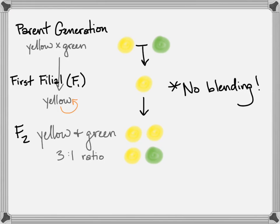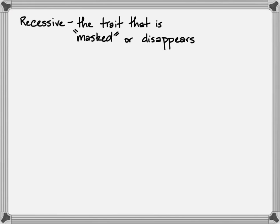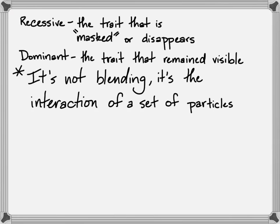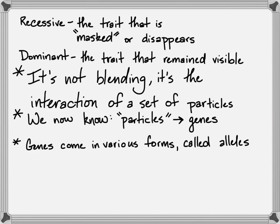Based on his observations, he came up with some terms that we still use today. The first one is recessive, and that's the trait that is masked by the dominant trait or disappears. The dominant trait is the one that remains visible in every generation. And then you have the fact that it wasn't blending, that it was the interaction of a set of particles. Today, we call those particles genes, and we know that there are various forms of a gene. We call them alleles.